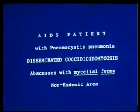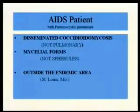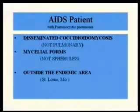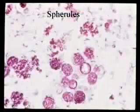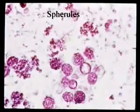Outside the endemic area: this patient had disseminated coccidioidomycosis — normally a southwest desert disease with spherules. But this one had mycelial forms and was in St. Louis, a non-endemic area where they never expect to see a case. This patient had pneumocystis pneumonia, disseminated but not pulmonary coccidioidomycosis — mycelial forms, not spherules, in St. Louis. Eventually spherules were found confirming coccidioidomycosis. The mycelial elements were present — the only form we used to see in tissue for coccidioidomycosis was the spherule.